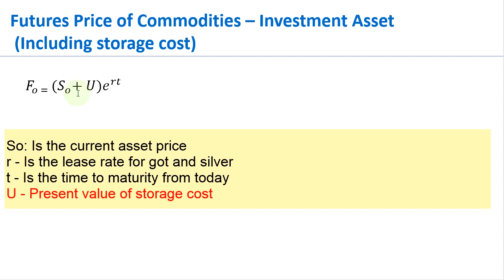That has to be factored in because whoever holds the silver now has to incur this cost. Because of that, when we calculate the futures price of an investment asset that has to be stored, we need to add the present value of the storage cost to the spot price. If I don't include this, my futures price will be understated. That's why you need to add the present value of the storage cost to your spot price.